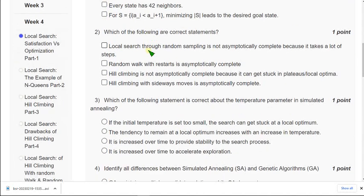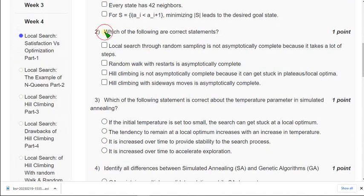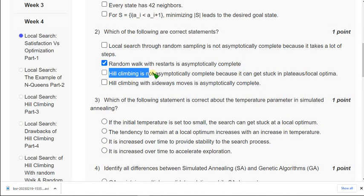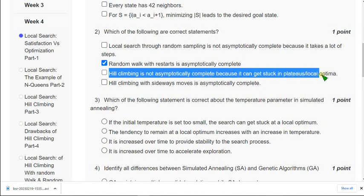So others will also be able to note that, and I will move on to the second question directly. Which of the following are correct statements? For second question I have got two solutions. The first one is second option: random walk with restarts is asymptotically correct. And the other one is third option: hill climbing is not asymptotically complete because it can get stuck in plateaus or local optima.